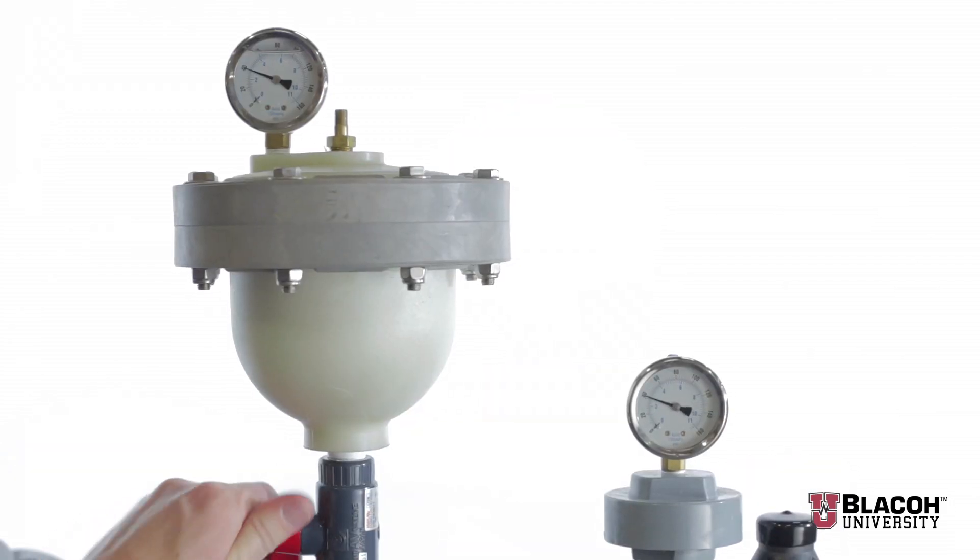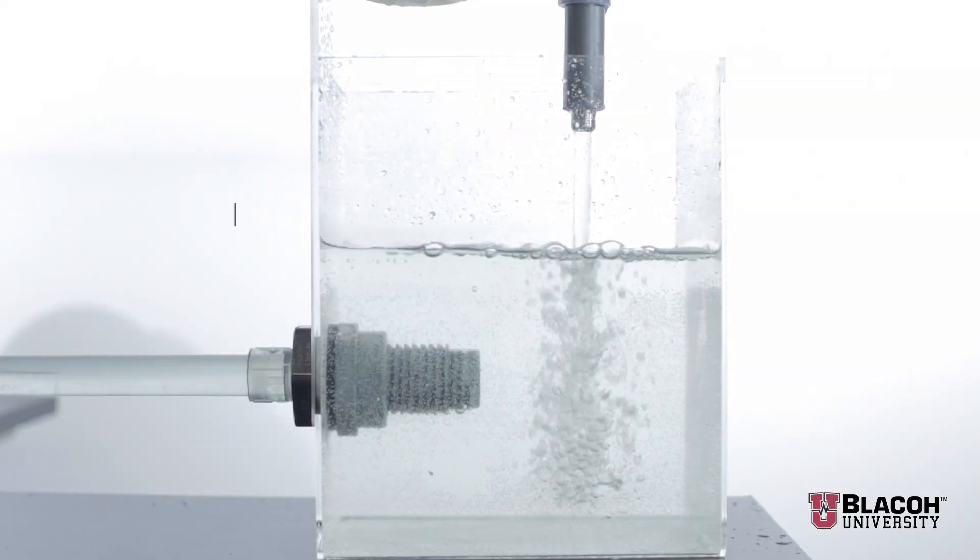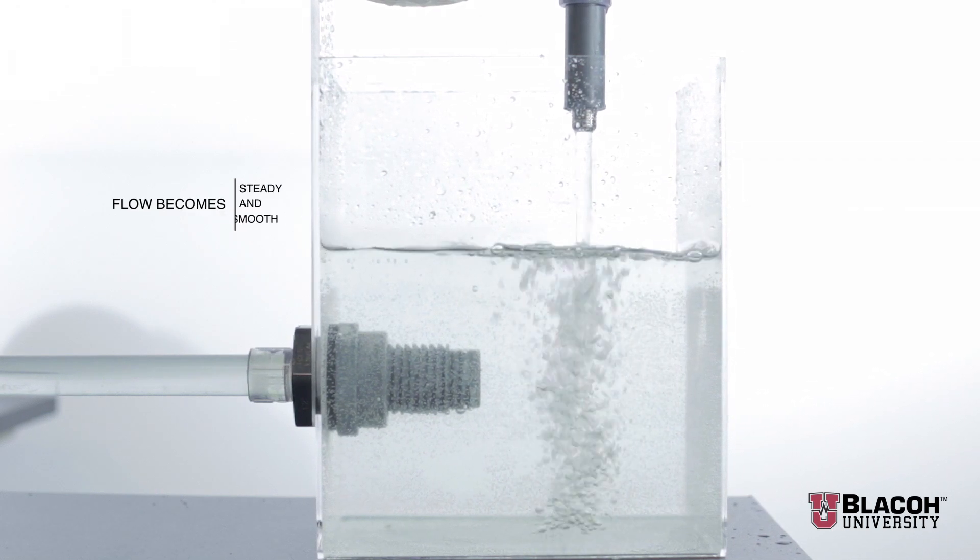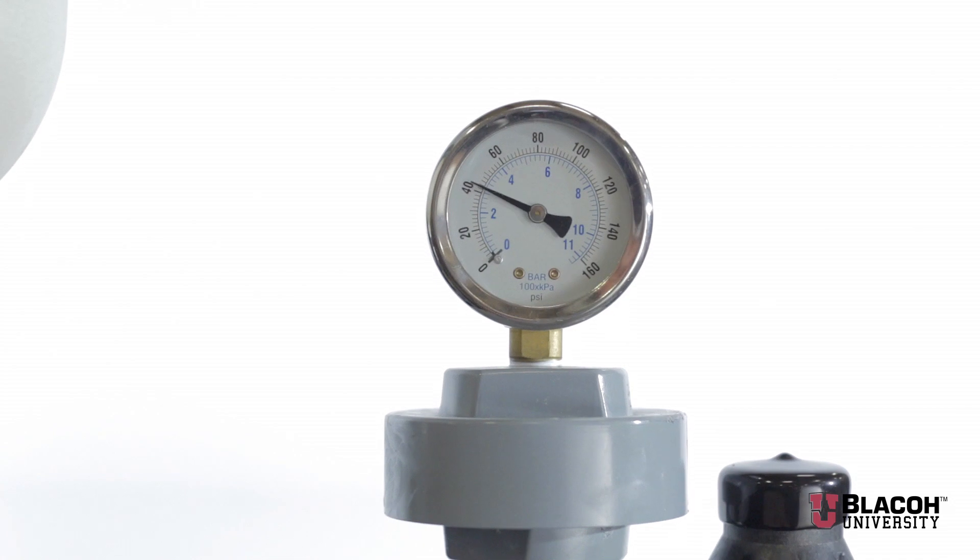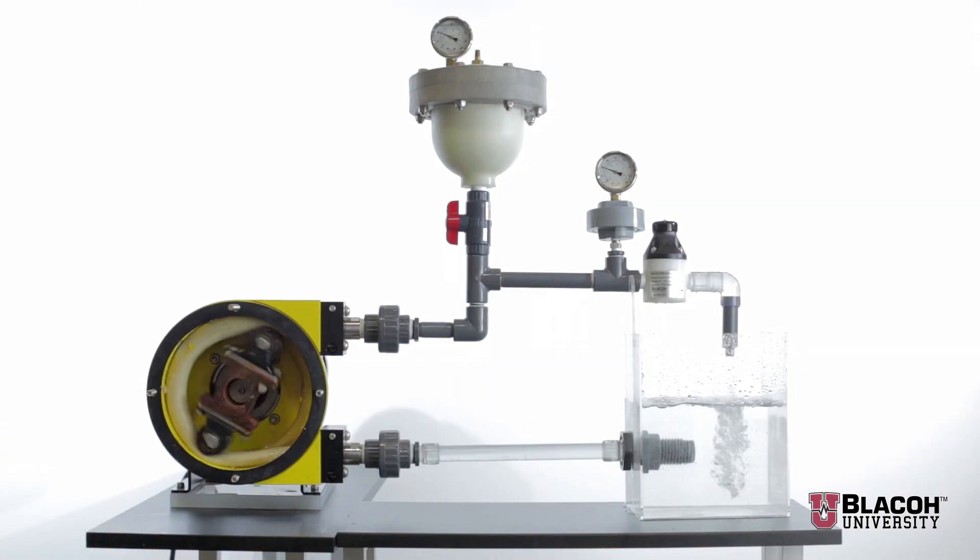The needle on the pressure gauge is nearly stabilized, indicating that there are no more pressure swings, thus protecting piping and other system components.